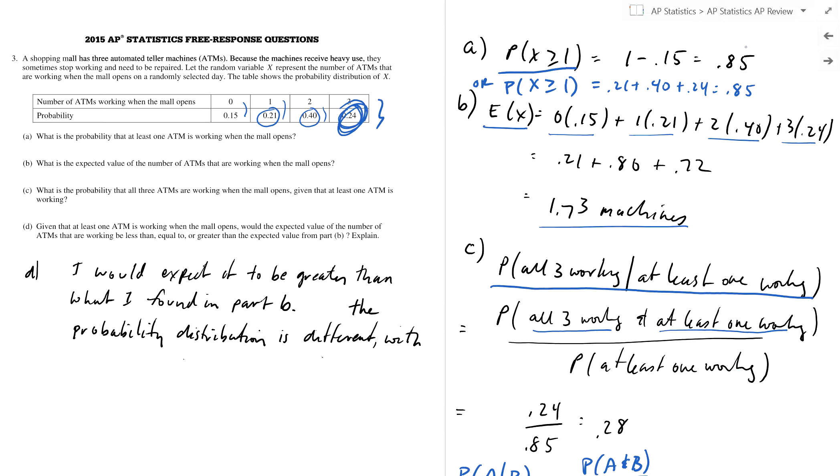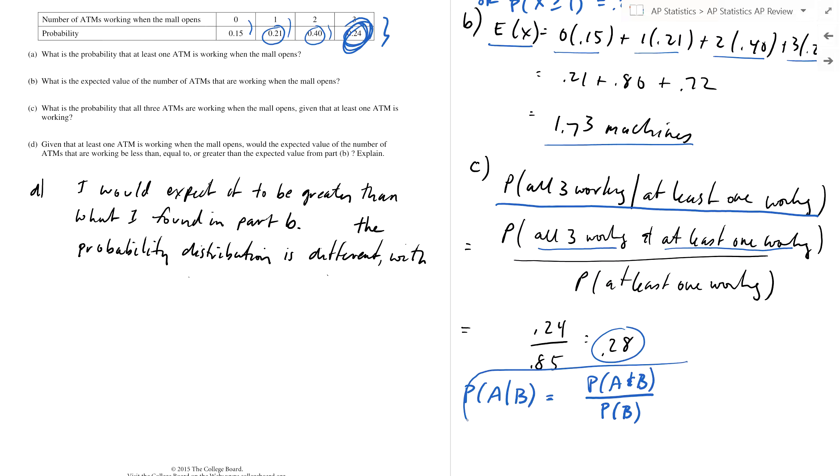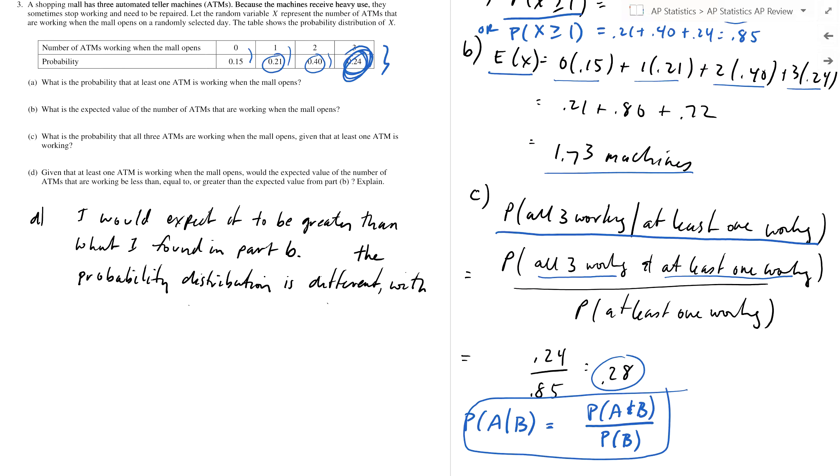Over the probability of at least one working. Well, go figure, that's what you did in the very first problem: 0.85. Or you just recalculate it and you get 0.28 for your answer on that one. Straightforward as long as you remember this relationship and can use it in the context of this problem.